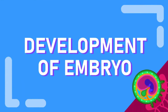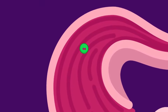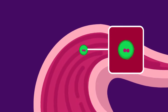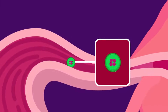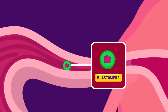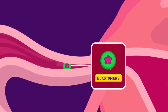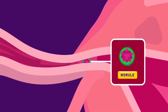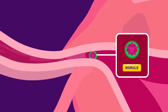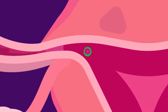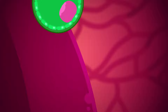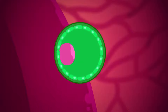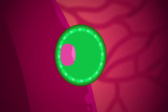The fertilized egg passes along the oviduct to the uterus, and as it does, it begins to divide to form a hollow ball of cells called the embryo. It takes about five days for the embryo to reach the uterus. Finally, the embryo becomes embedded in the uterine lining. This is called implantation.